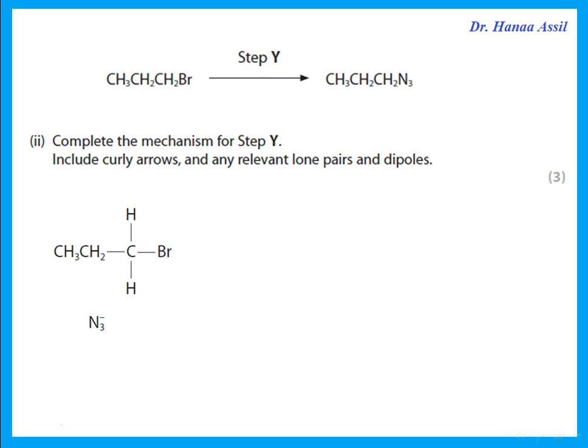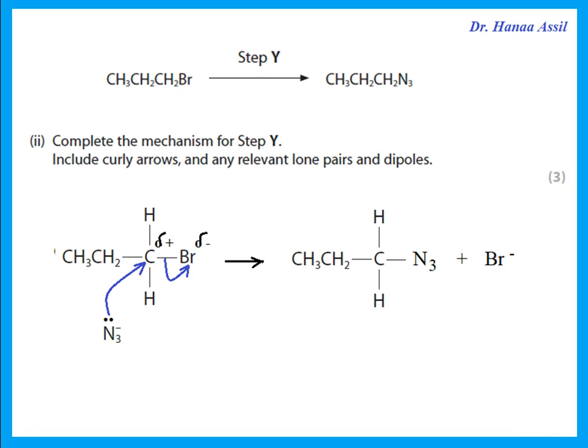Complete the mechanism for step Y — replacing Br with the azide ion N₃⁻. Include curly arrows and relevant lone pairs and dipoles. N₃⁻ is a nucleophile that attacks the carbon atom (which is slightly positive), while the electrons between C and Br move to Br. The other product is Br⁻. This is an SN2 mechanism.